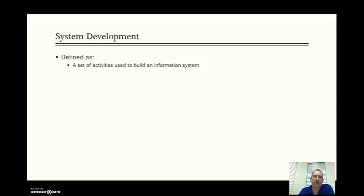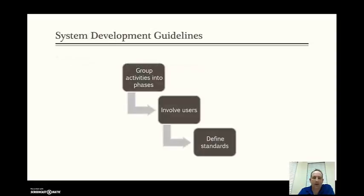The definition of system development is a set of activities used to build an information system. There are typically three different guidelines to system development. The first one being to group the activities into phases, making sure that all of your similar tasks and activities are all grouped together, and you don't have them spread out throughout the life of the project.